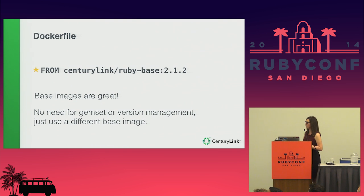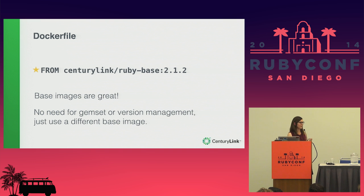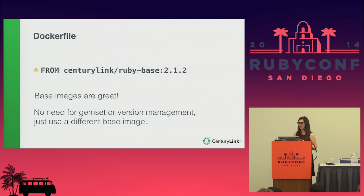The FROM directive is actually pretty powerful. In a perfect world you'd be using the same version of Ruby in all of your services. You only need one base image — you can reference it from other Dockerfiles for other services. And since Ruby is baked into it, you don't need a gemset manager or version manager because there's just one thing: one set of gems, one version, baked into your base image. If you want to update Ruby, you just update the base image and it's shared across everything.